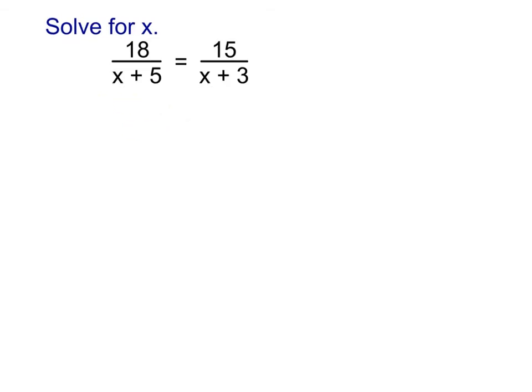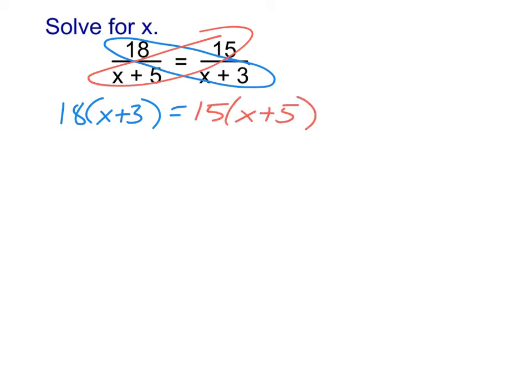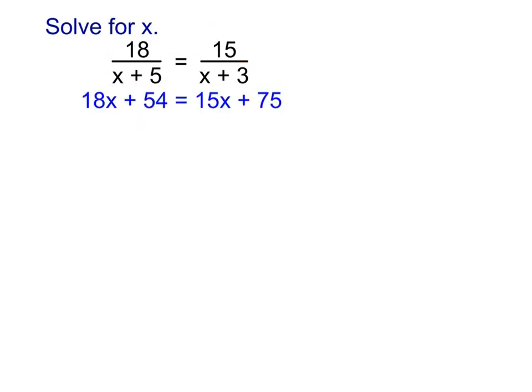Alright, next one for us to do. And so to solve this one, again, it's a proportion I can cross multiply. So, I'm going to go ahead and do the 18 times x plus 3. Now, for the first moment here, I'm going to just write it out the long way. And I write it out as 18 times x plus 3 equals, and then we cross multiply the other way as well, so that's going to be 15 times x plus 5. Now, why did I write it out the long way first? Because I want to emphasize to you the idea that when we multiply that 18 by x plus 3, I've got to multiply 18 by both of those terms. I've got to multiply it by the x and by the 3. Same thing with the 15. It has to distribute to both the x and the 5. So, the cross multiplying step should give us this.